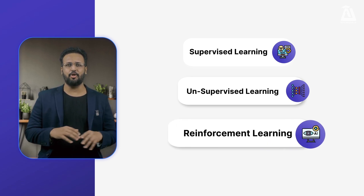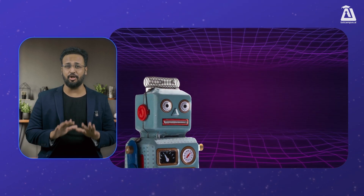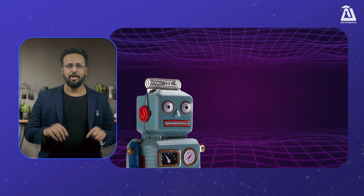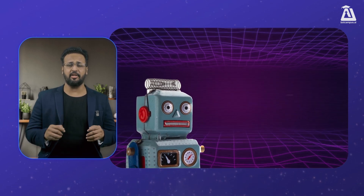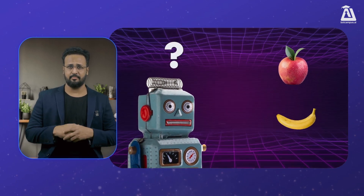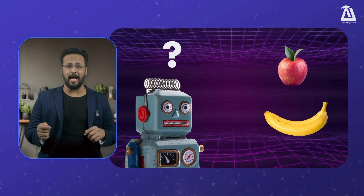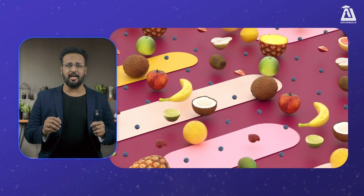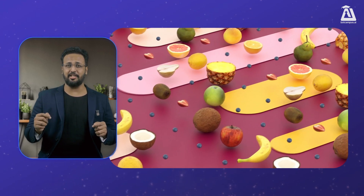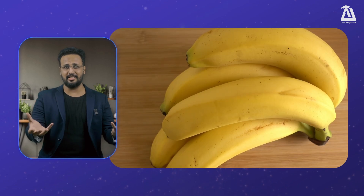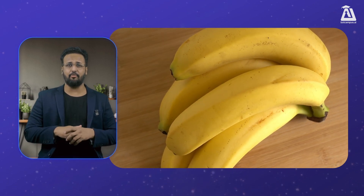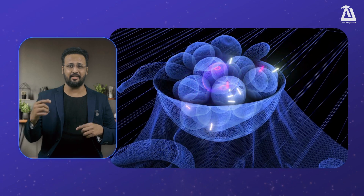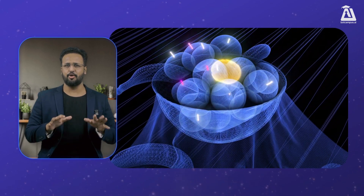Let's dig deeper into what exactly is supervised learning. Imagine you have a smart computer but it does not know anything yet. You want to teach it to tell the difference between an apple and a banana. You show it lots of pictures of apples and bananas and you tell it which is which. Each time you show your computer a picture, you are like a teacher saying this is an apple and this is a banana. After a while, your computer starts to notice things like apples are usually round and red, and bananas are long and yellow.